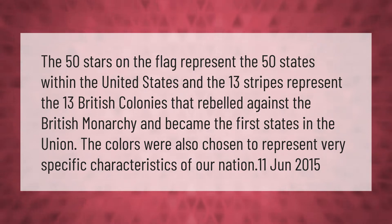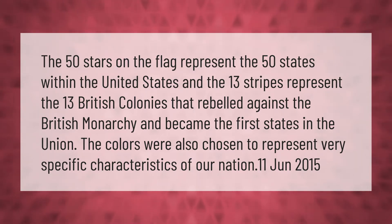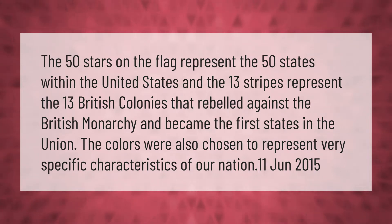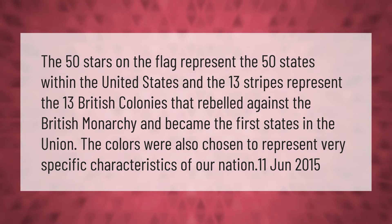The 50 stars on the flag represent the 50 states within the United States, and the 13 stripes represent the 13 British colonies that rebelled against the British monarchy and became the first states in the union. The colors were also chosen to represent very specific characteristics of our nation.